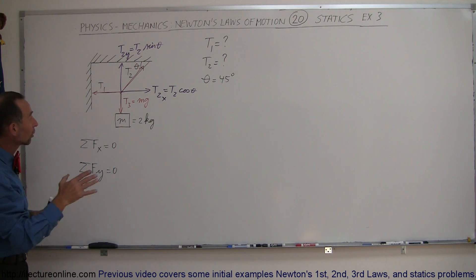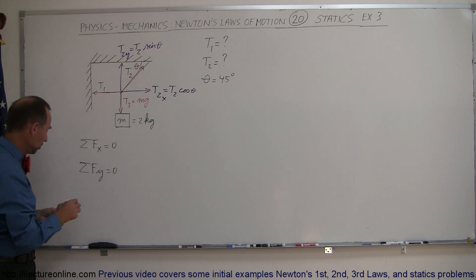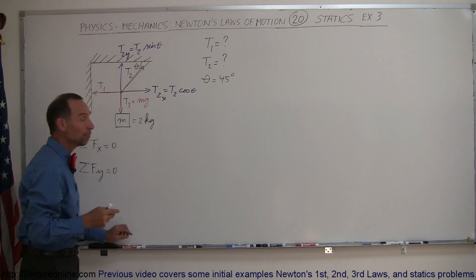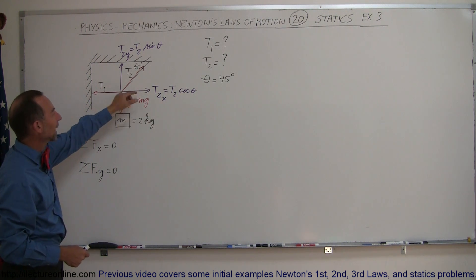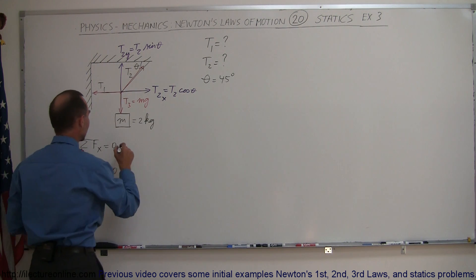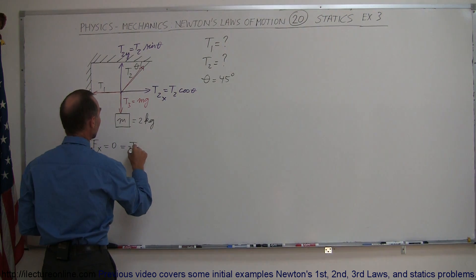So now we can go ahead and plug all our components into our equation. In the x direction we have two components. We have T1 to the left, we have T2x to the right. So we can say that this is equal to T1 or minus T1,